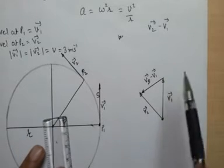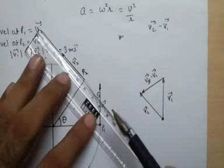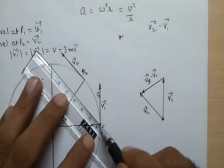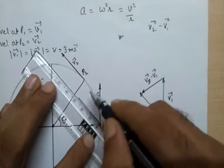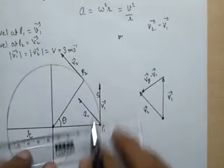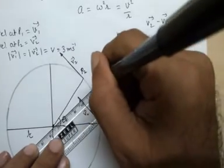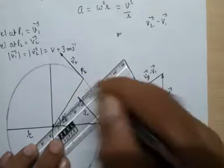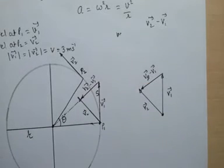Let us confirm that by doing a small exercise. I already have v1; now I draw v2 from this particular point — a line 3 centimeters long. Joining the two vectors, I get v2 minus v1, and if I extend this line it goes toward the center of the circle. This clearly shows that the change in velocity v2 minus v1 is directed toward the center of the circle.